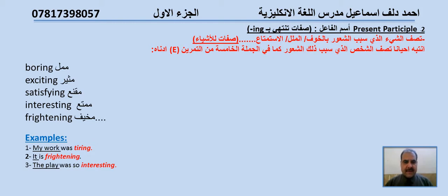Examples: Number one: My work was tiring. عملي كان متعباً. الفاعل my work غير عاقل والصفة tiring اسم الفاعل. Number two: It is frightening. إنه مخيف. الفاعل it غير عاقل. Number three: The play was so interesting. المسرحية كانت جداً ممتعة. الفاعل the play غير عاقل والصفة interesting اسم الفاعل.